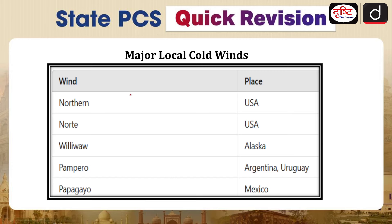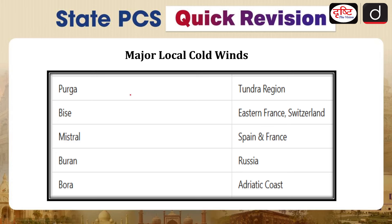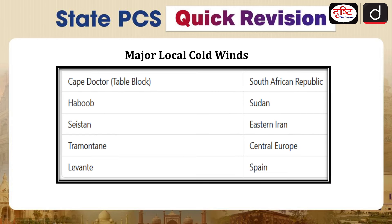Among cold local winds: Norther and Norte originate in the USA; Bilbao is in Alaska; Pampero is in Argentina and Uruguay; Papagayo is in Mexico; Purga is in the tundra region; Bise is in eastern France and Switzerland; Mistral is in Spain and France; Buran is in Russia; Karaburan is in central Asia; Bora is on the Adriatic coast; Cape Doctor or table block is in South Africa; Haboob is in Sudan; Siastan is in eastern Iran; and Tramontane is in central Europe.